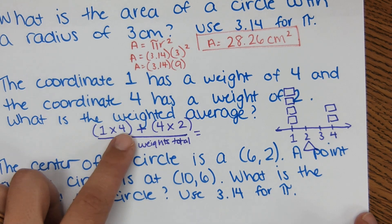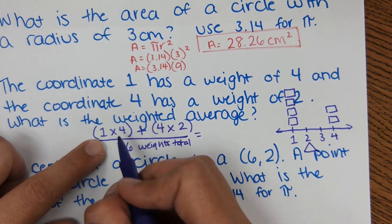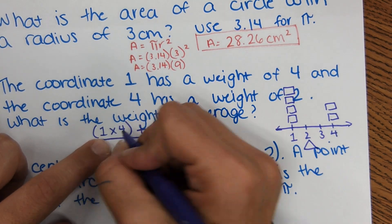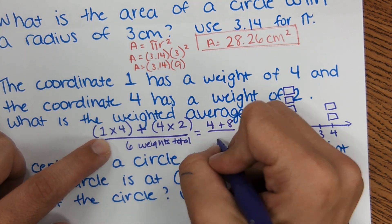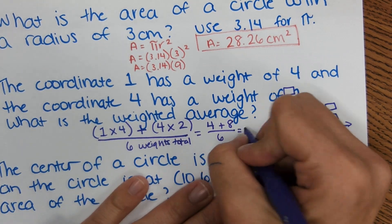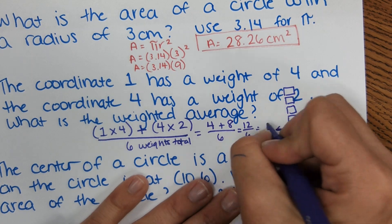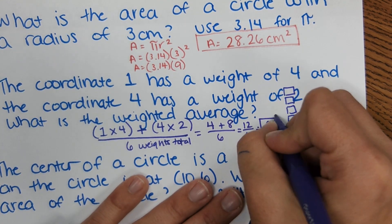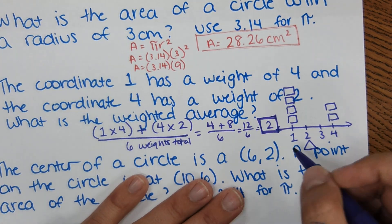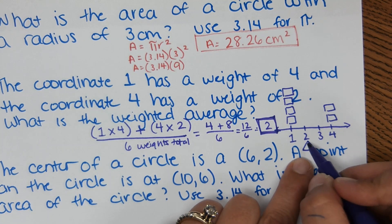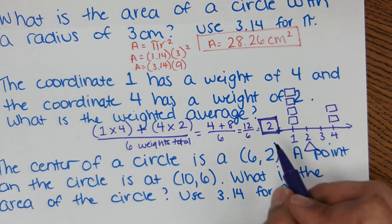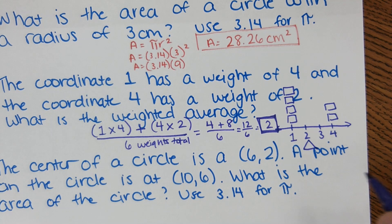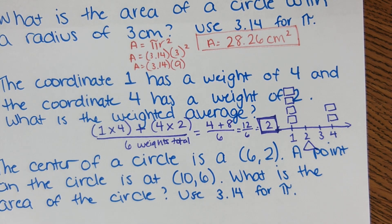And so we're going to solve this using order of operations, so in parentheses I need to solve that first, 1 times 4 is 4, 4 times 2 is 8, over 6, I get 12 over 6, which equals 2. So the weighted average, the balance point is 2, which is exactly where I drew it visually, I said it was going to land about 2. Now it could have been a decimal or something, so it is important to solve it out, but it just so happens it comes out to a whole number.